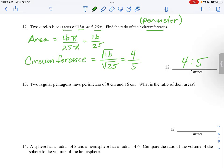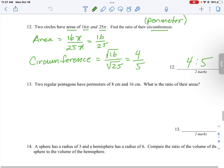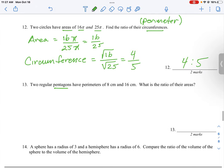And if we take a look at question 13, we're given two shapes, so we're given two pentagons which have perimeters of 8 and 16, and we're going to figure out what is the ratio of their areas.